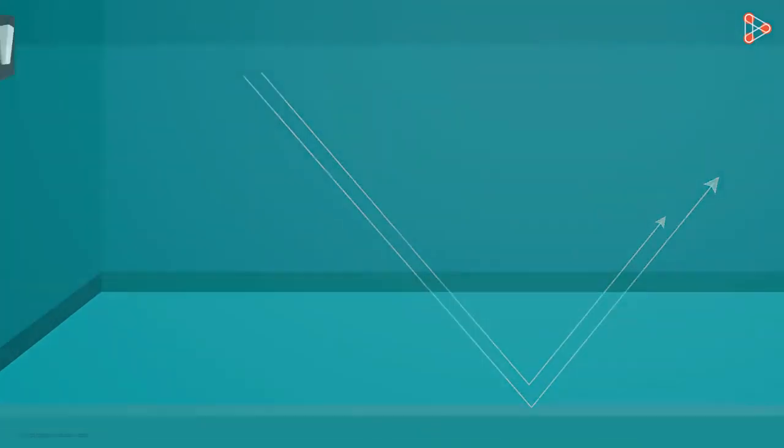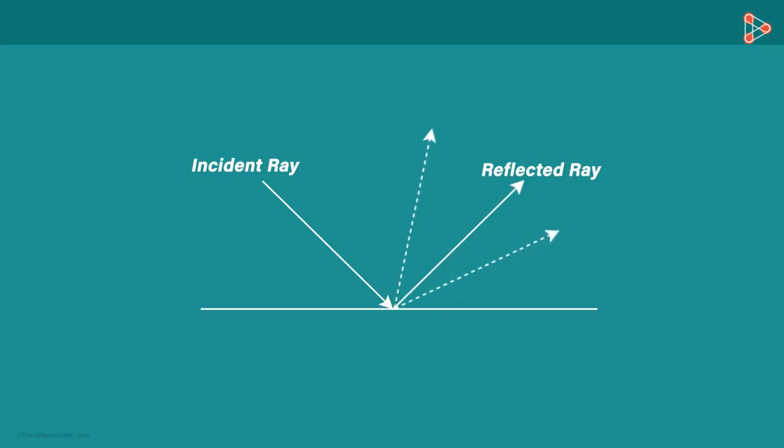Consider this plane surface. Suppose one of the rays of light from the bulb strikes at this point. This is called an incident ray. We know that this surface will reflect this ray, and the reflected ray will travel in this direction. Why only in this direction? Why not here or here? This is because rays of light obey certain laws of reflection when they strike any surface.